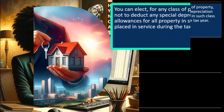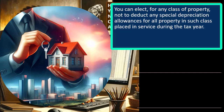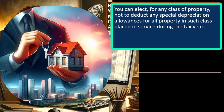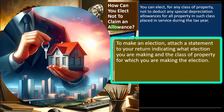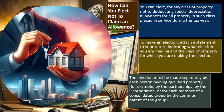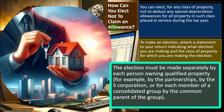You can elect for any class of property not to deduct any special depreciation allowance for all property in that class placed in service during the tax year. To make the election, attach a statement to your return indicating what election you are making and the class of property involved. The election must be made separately by each person owning qualified property — for example, by the partnership, by the S corporation, or for each member of a consolidated group by the common parent.